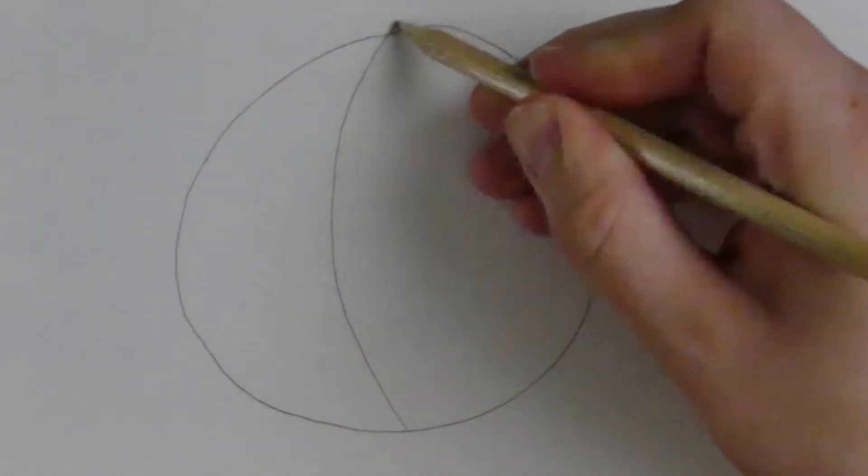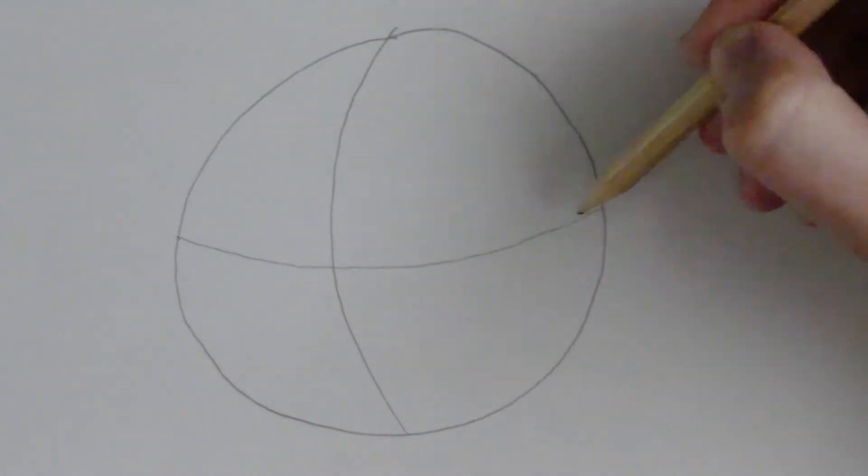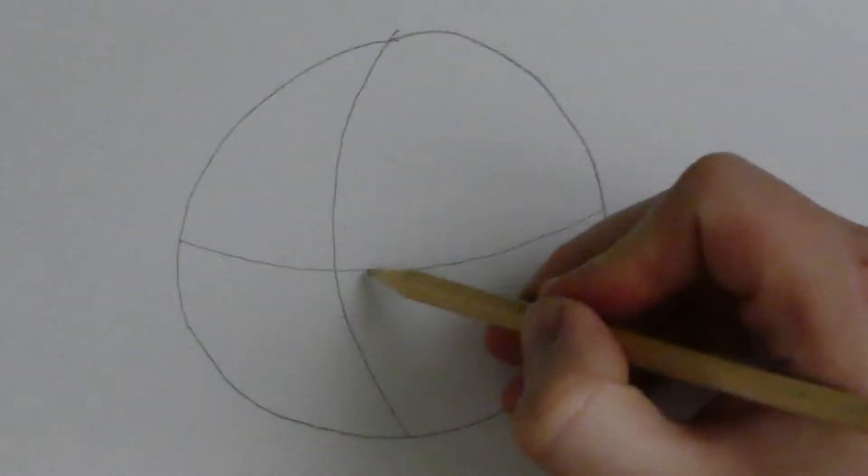So, first step as always, you start with a circle. Normally your circle is a perfect circle, mine is more of a blob on the paper.